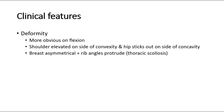Clinical features: the deformity will be more obvious on flexion. The shoulder is elevated on the side of convexity and the hip will stick out on the side of concavity. Breasts may be asymmetrical, and the rib angles protrude in thoracic scoliosis.